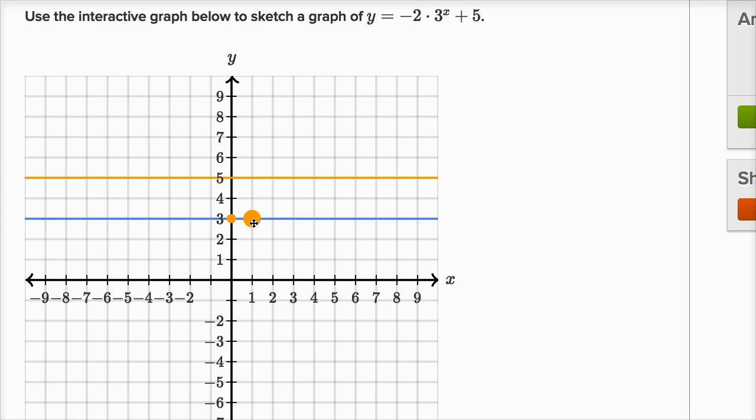Now let's think about when x equals one, and I'm picking that because it's easy to compute. Three to the first power is three times negative two is negative six plus five is negative one. So when x is one, y is negative one.